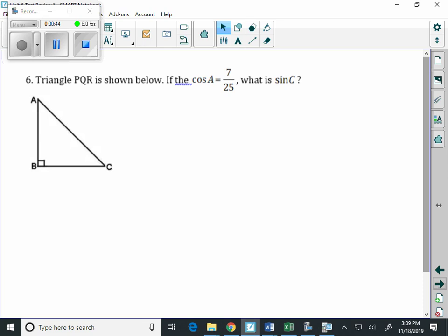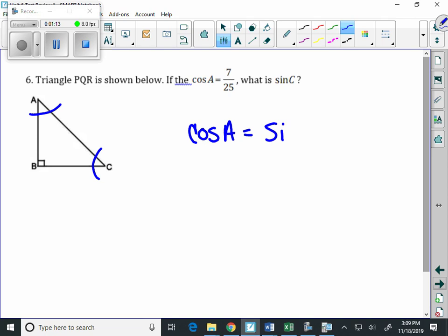Number six, it's the same idea here. Triangle ABC is shown below. If the cosine of A is 7/25, then what's the sine of C? Once again, the cosine of A is going to be the same value as the sine of C, so since cosine of A is 7/25, then sine of C must also be 7/25. That's the answer.